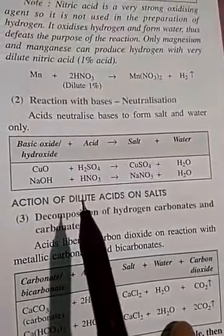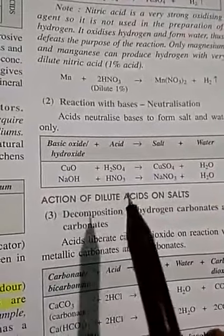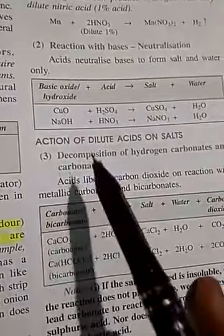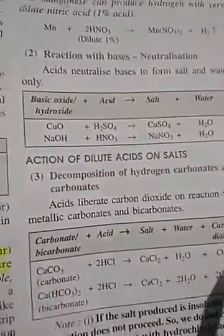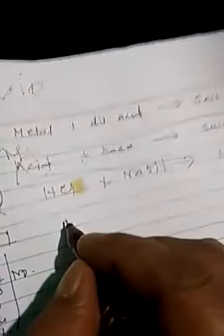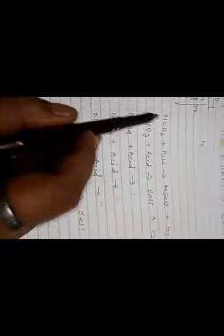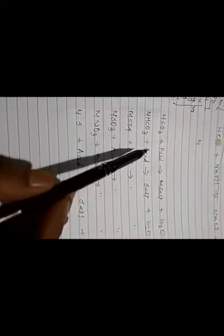When acid reacts with bicarbonate salts, it will decompose and form these products. Any metallic carbonate when reacts with acid forms salt, water, and carbon dioxide gas. Similarly, metallic bicarbonate like zinc bicarbonate or magnesium bicarbonate reacts with acid to form salt, water, and carbon dioxide. Metallic sulfate like calcium sulfate, iron sulfate, zinc sulfate reacts with acid; they form salt, water, and sulfur dioxide.